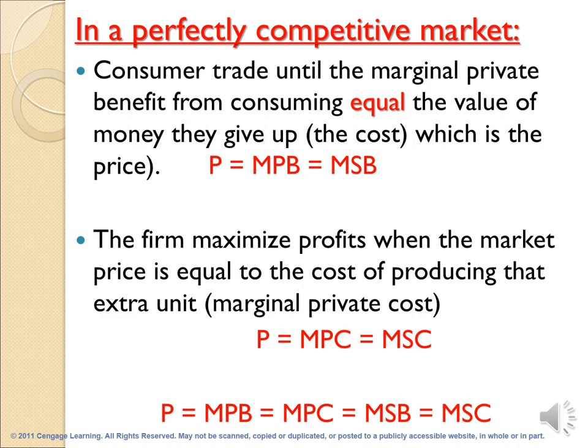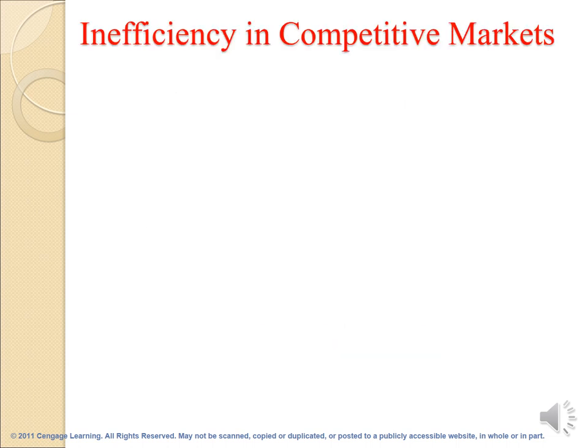From these two equations, we can say that price equals marginal private benefit equals marginal private cost equals marginal social cost. According to this condition — price equals marginal private benefit equals marginal private cost equals marginal social benefit equals marginal social cost — the competitive markets achieve an efficient allocation of resources.